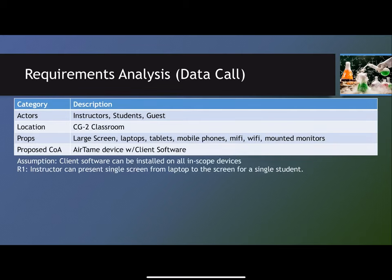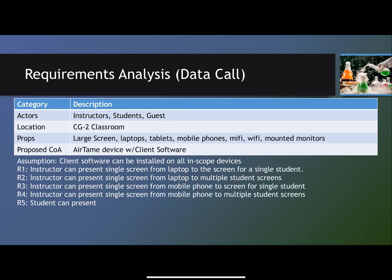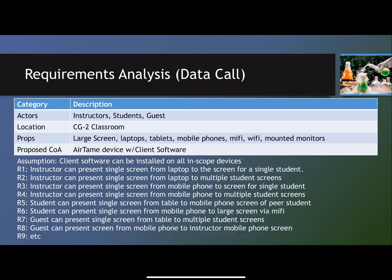So, how do you build this data call? What requirements analysis will do is take the narrative and break it apart into actors, locations, props, and proposed solutions. In this situation, the actors are instructors, students, and guests. The location is a CG2 classroom. The props are the screens, the laptops, mobile phones, and monitors.